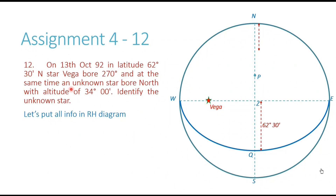The next information is that the unknown star bore north with an altitude of 34 degrees at the same time Vega was sighted. In our diagram, the ZN line represents the north bearing or 000 bearing, so the unknown star has to be somewhere on this line. Its altitude is 34 degrees. Point N is on the horizon, and our star is 34 degrees above the horizon, so from point N going 34 degrees upward, this is where the unknown star is. Let's mark it as X. All the information has now been fed into the rational horizon diagram.